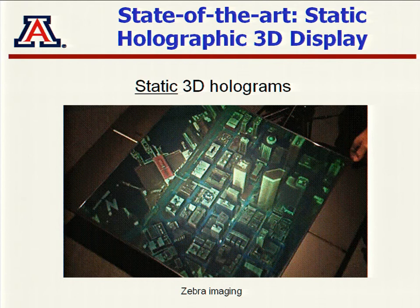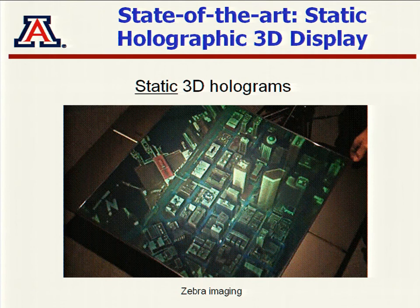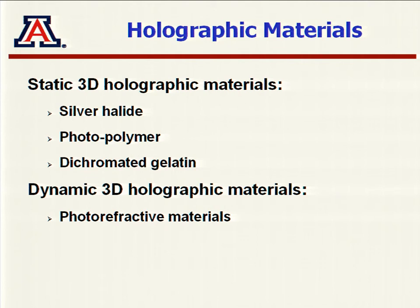The problem with those displays is that they are not dynamic — they're static. You print them, put them on the wall, and look at them. What we are trying to do is replace these with dynamic holograms, something you can change: erase an image, put another one, basically update it. The materials used for static 3D holographic display include silver halides, polymers, and dichromatic gelatin. For photopolymer, you put light on it and the material polymerizes, changing its state, making it difficult to change back — that's why they're static.